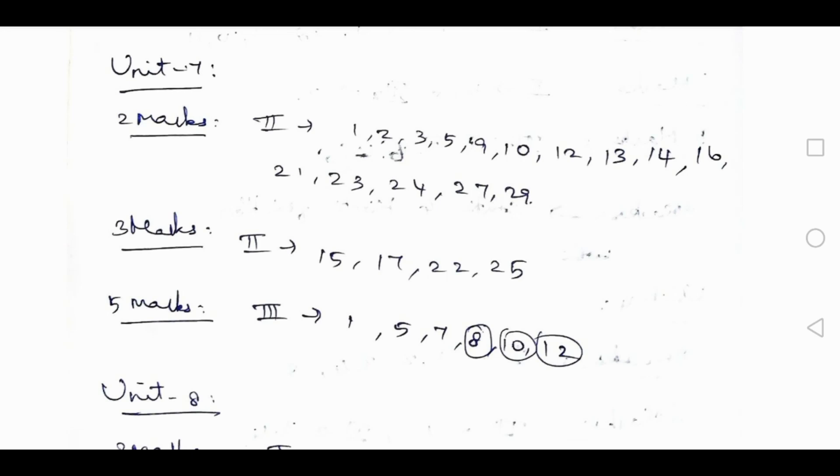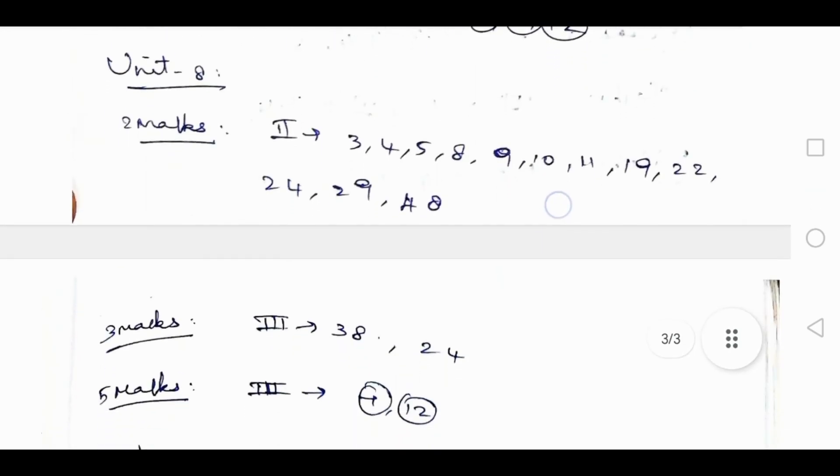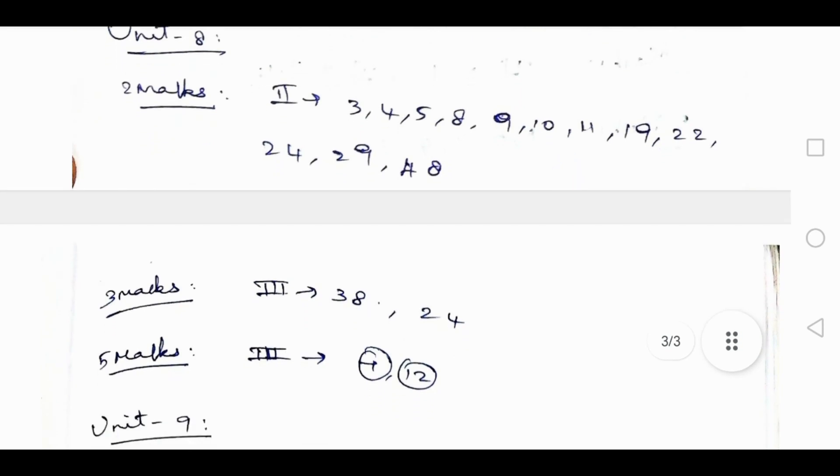Unit 8: 2 mark up to 2nd rom later 3, 4, 5, 8, 9, 10, 11, 19, 22, 24, 29, and 48. 3 mark up to 3rd rom later 38 and 24. 5 mark up to 3rd rom later 7 and 12 - both are important, don't skip it.